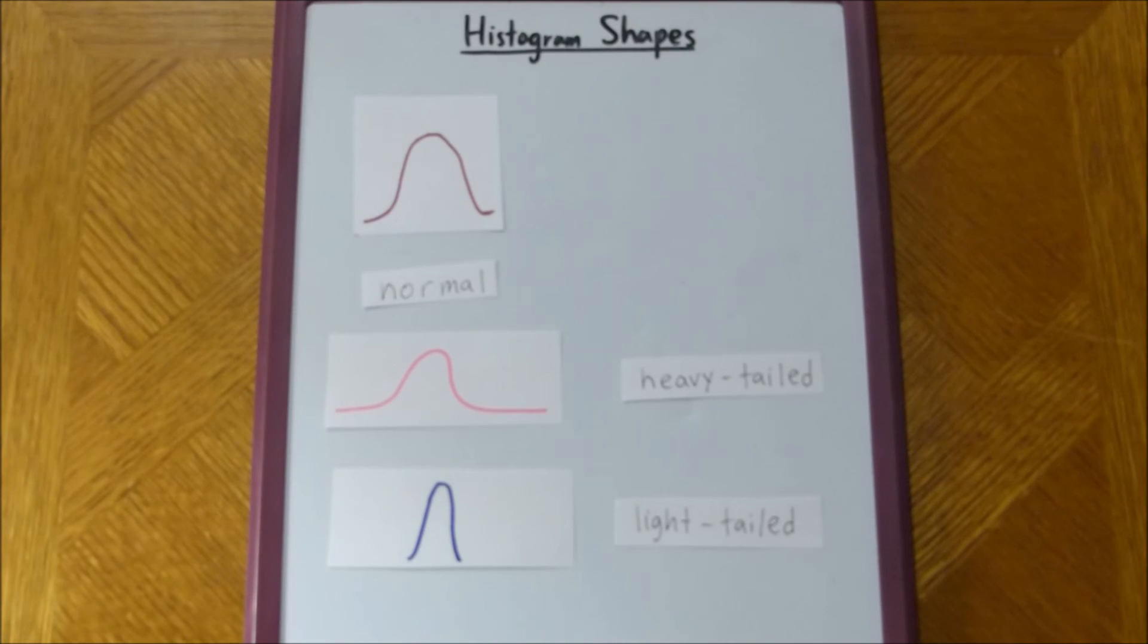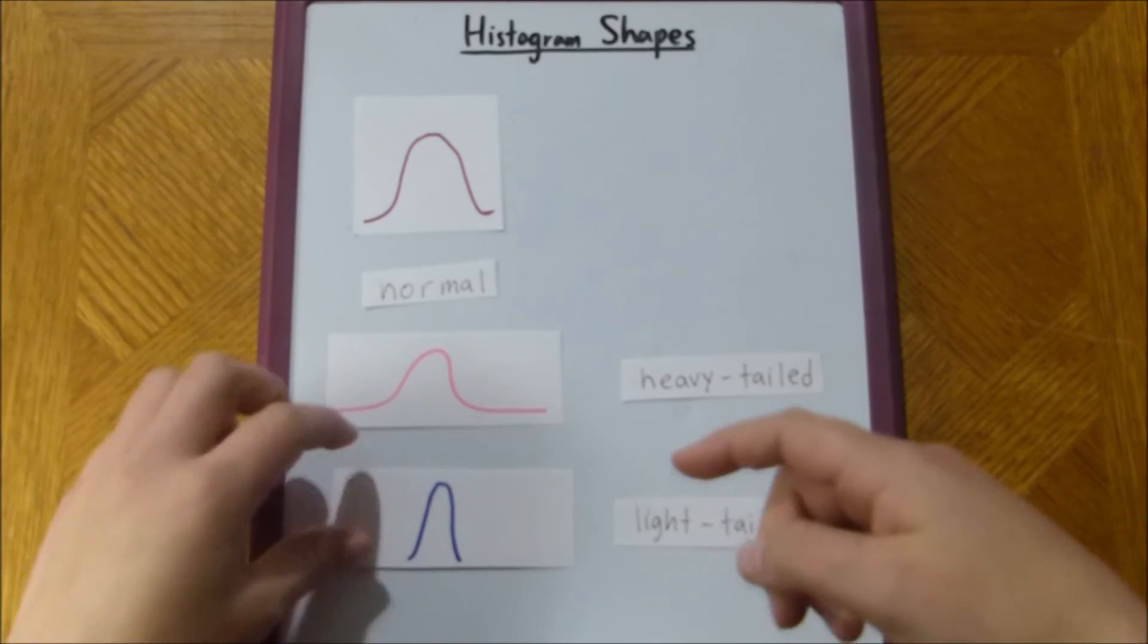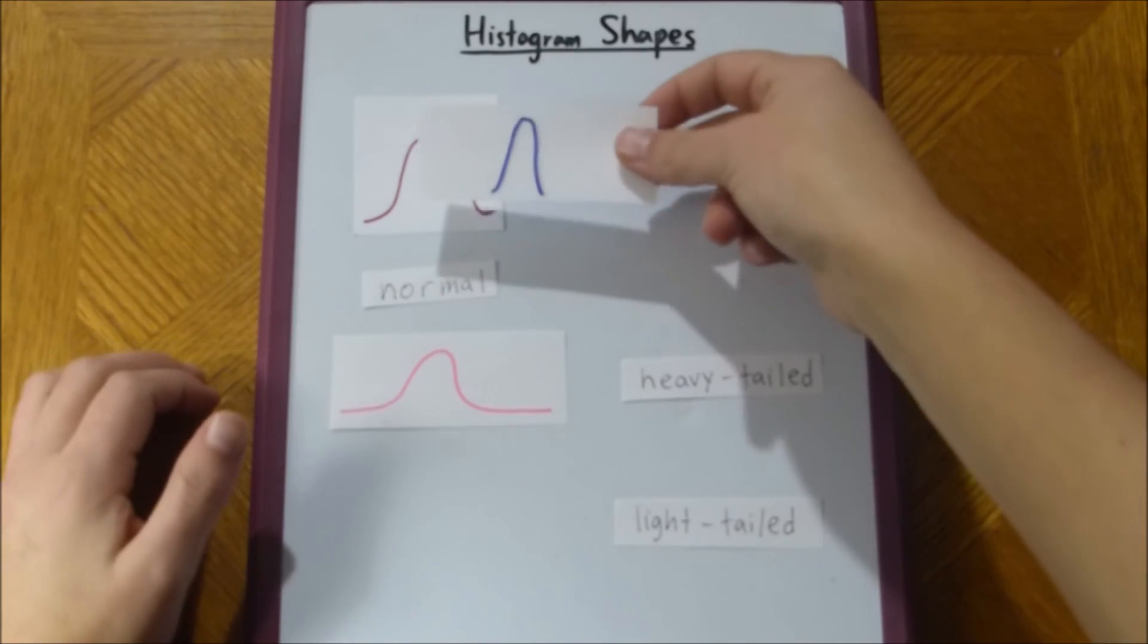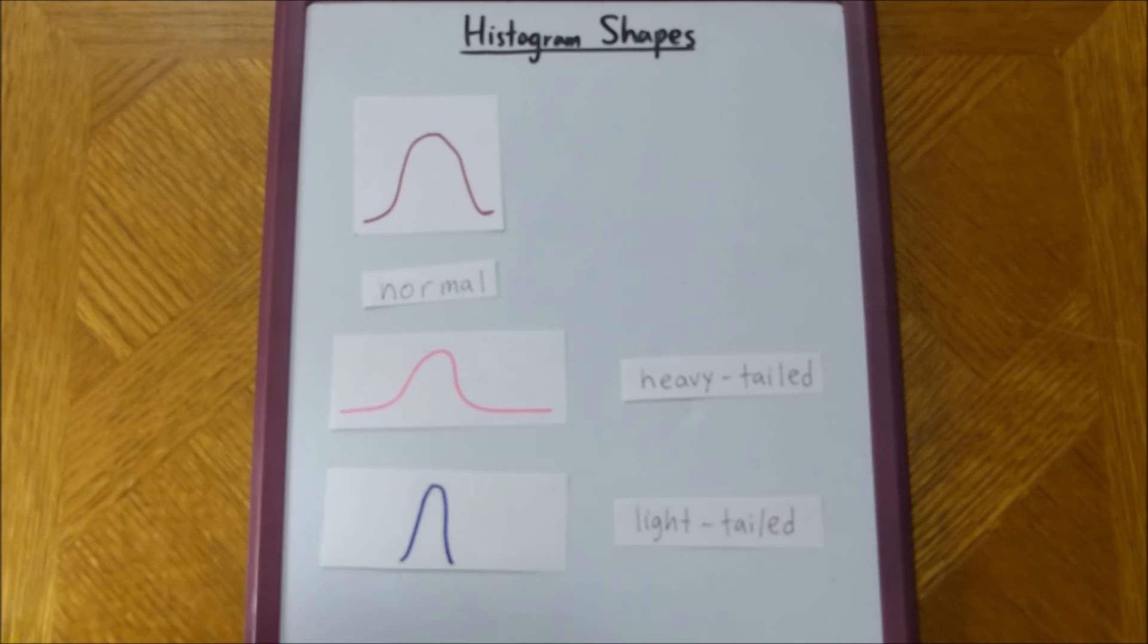A light-tailed is a curve with tails that decrease more rapidly than the normal tails. You can see here, our slope, if you set them side by side, the slopes are a lot steeper for the light-tailed than the normal.